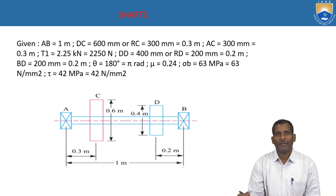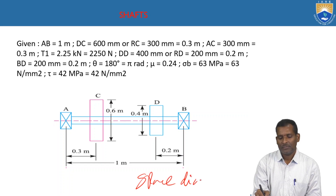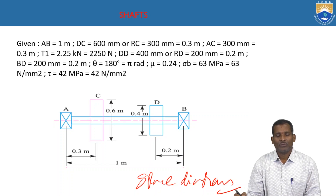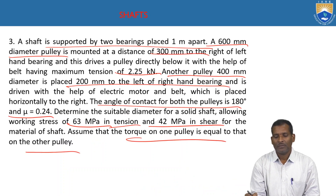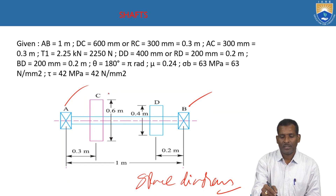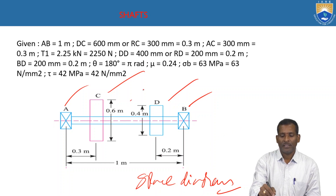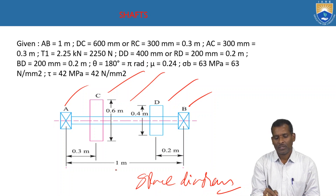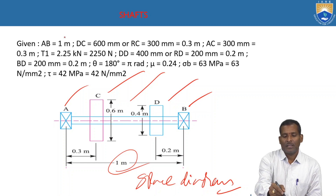Write down the given data and draw the space diagram. Two bearings A and B are 1 meter apart. Pulley C of 600 mm diameter is mounted at 300 mm from the left bearing. Pulley D of 400 mm diameter is placed 200 mm from the right bearing. T1 = 2.25 kilonewtons, μ = 0.24, θ = 180°. Bending stress σ_b = 63 MPa and shear stress τ = 42 MPa are given.